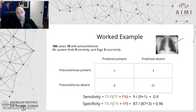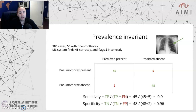An important point before concluding: these ratios of sensitivity and specificity are independent of the disease prevalence in your test set. Here we had a disease prevalence of 10% — 10 cases of pneumothorax in 100 — but the sensitivity and specificity remain exactly the same regardless of how many cases are positive or negative in your test set. To illustrate, let's change the results slightly: we have 100 cases, but now 50% of them have a pneumothorax, and the machine learning system performs at exactly the same levels of sensitivity and specificity.